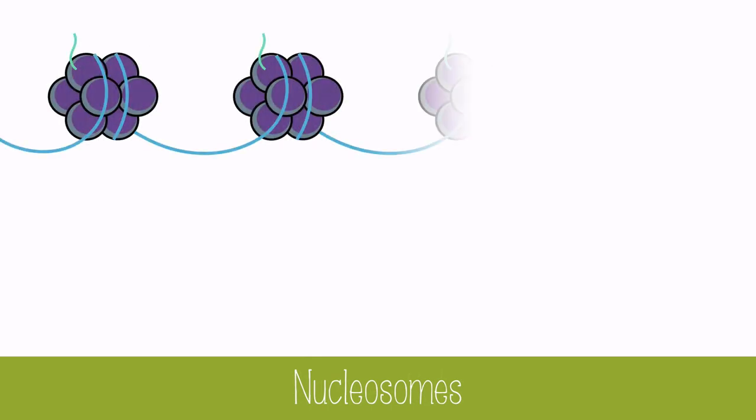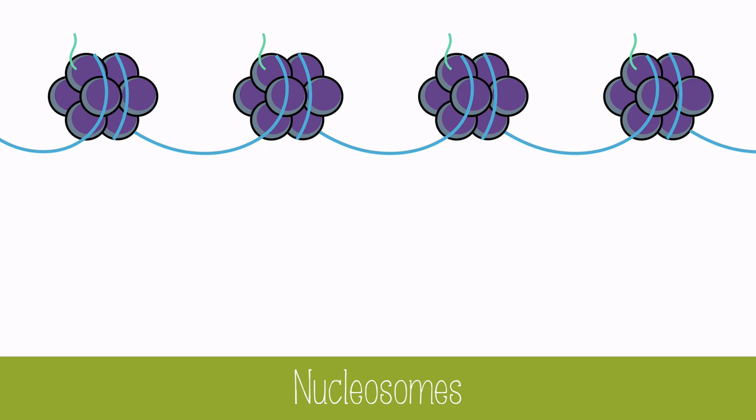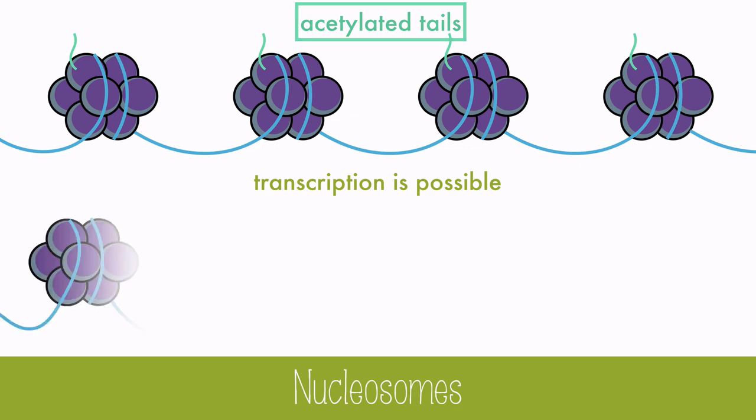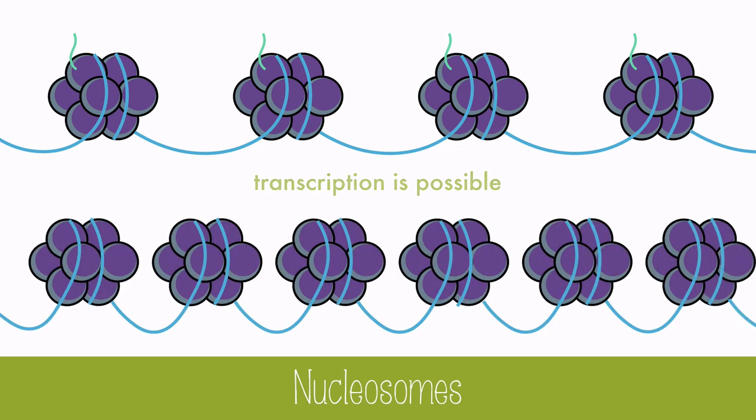Nucleosomes also play a role in gene expression. When the tails of the histones are acetylated, the nucleosomes become less tightly packed. In this loosened form, transcription can occur, which is the first part of gene expression. When the tails of the histones are deacetylated, the nucleosomes pack in tighter, stopping gene expression.